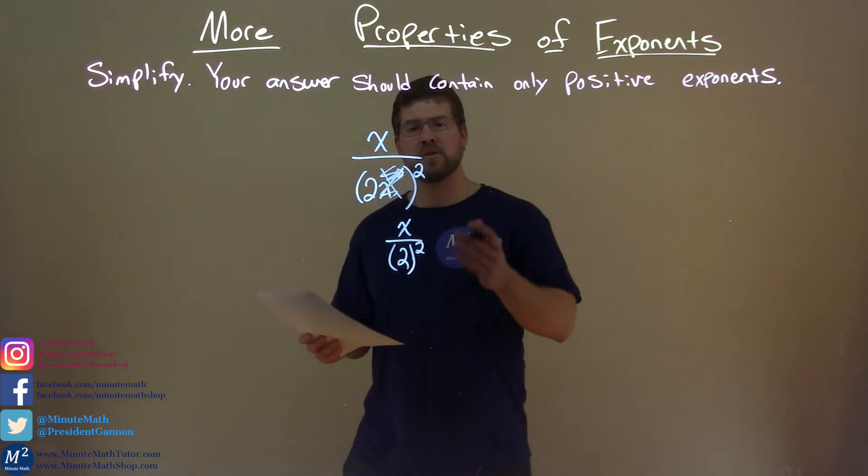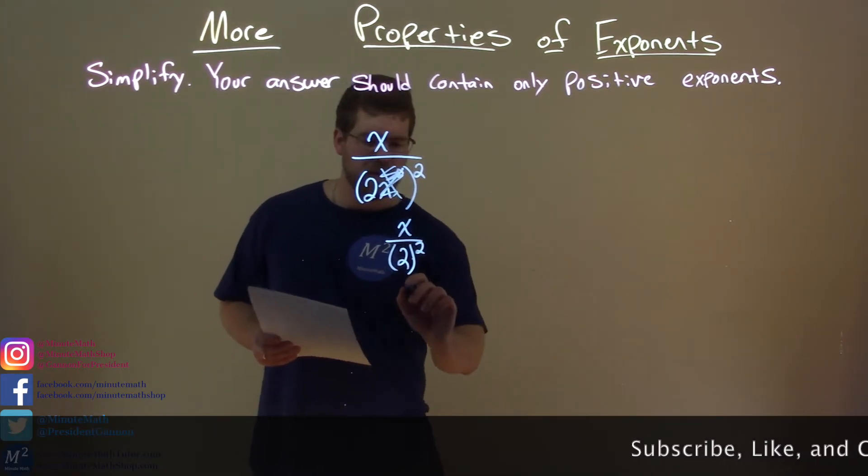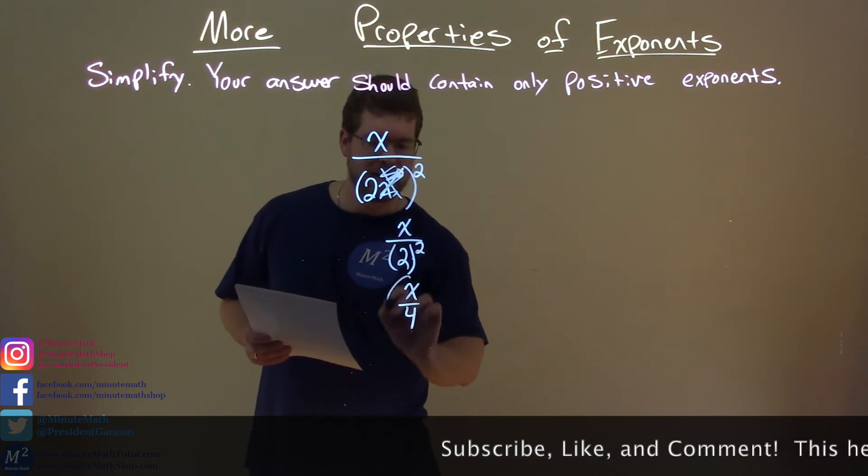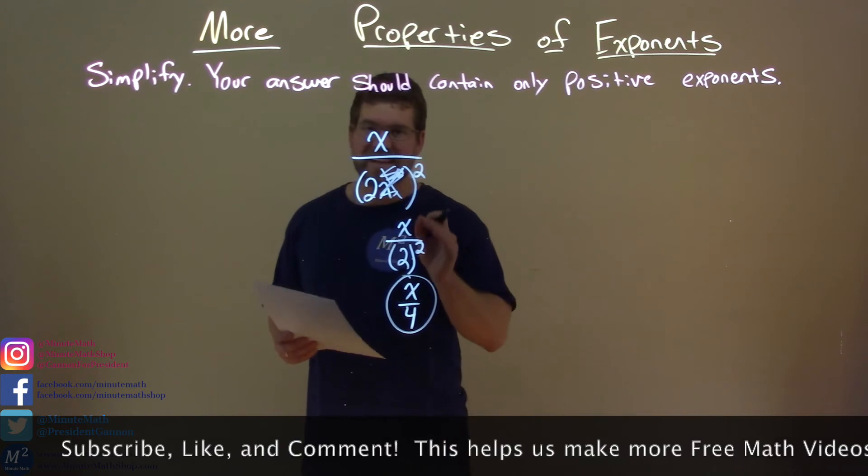So we have x over 2 to the second power. Well, it's 2 squared. That's 4. So we have x over 4, and now we're actually done. This is a fairly easy problem. Our final answer is just x over 4.